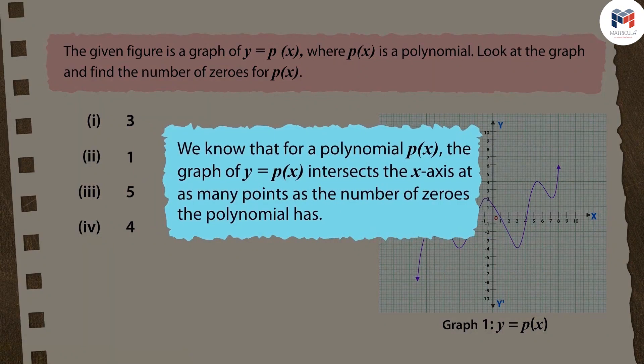We know that for a polynomial p(x), the graph of y = p(x) intersects the x-axis at as many points as the number of zeros the polynomial has.